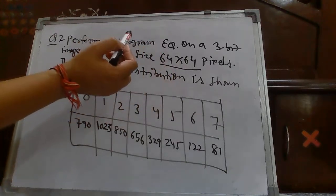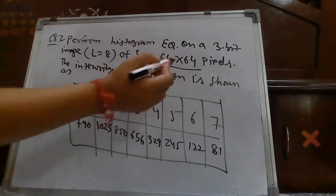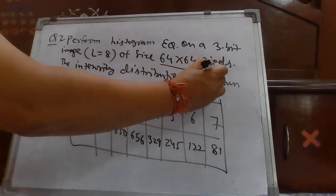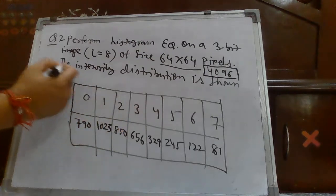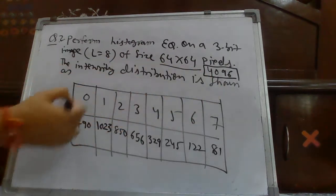Of size 64 cross 64. 64 cross 64 pixels means how many number of total pixels in the image? 4096. So, size of image is 4096 and intensity distribution is shown here.